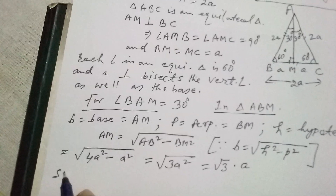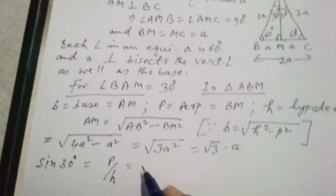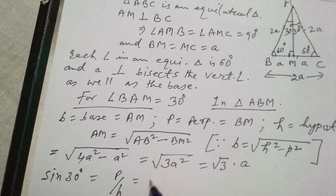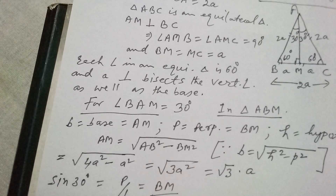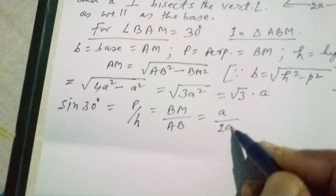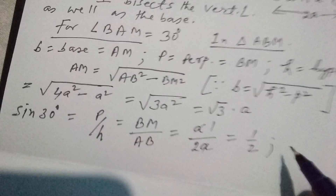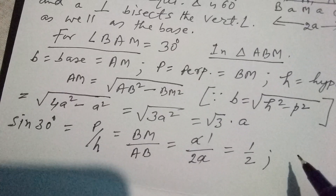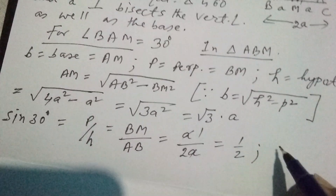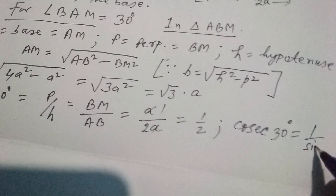For sin 30 degrees, we know that sine equals perpendicular by hypotenuse. The perpendicular for this triangle is BM and H is AB. BM equals A and AB equals 2A, so A and A cancel, giving sin 30° = 1/2. Since sine and cosecant are reciprocal to each other, cosec 30° equals 1 divided by sin 30°, which equals 2.